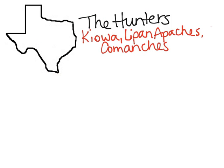The next group are the hunters — the Kiowas, the Lipan Apaches, and the Comanches. You're going to see these groups out in the Mountains and Basins region, moving up into the Panhandle region of Texas. They roam consistently through this part of Texas as well as into Mexico and New Mexico.